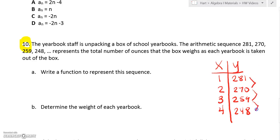This is what you would put into stat or you can do it by hand. It's decreasing by 11 each time, so we know our slope is going to be negative 11. Then to figure out the y-intercept we go backwards, so 281 plus 11 would be 292. Then it says determine the weight of each yearbook. We know each time they take a yearbook out it's going down 11 pounds, so that means each yearbook must weigh 11 ounces.